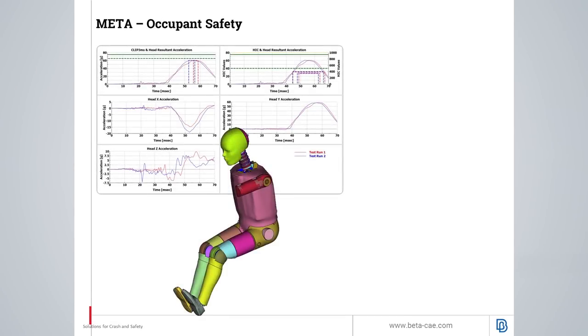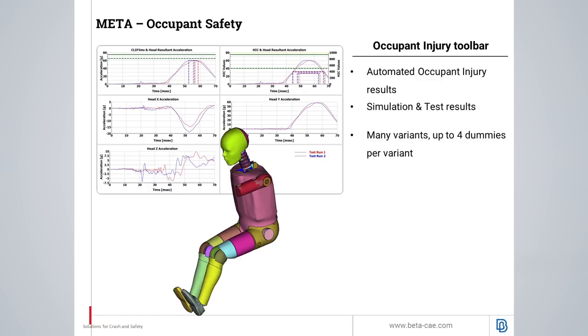Regarding the post-processing stage using Meta, we offer a toolbar for occupant injury criteria. One can automatically get the occupant injury results and combine simulation and test results, having many variants with up to four dummies per variant.